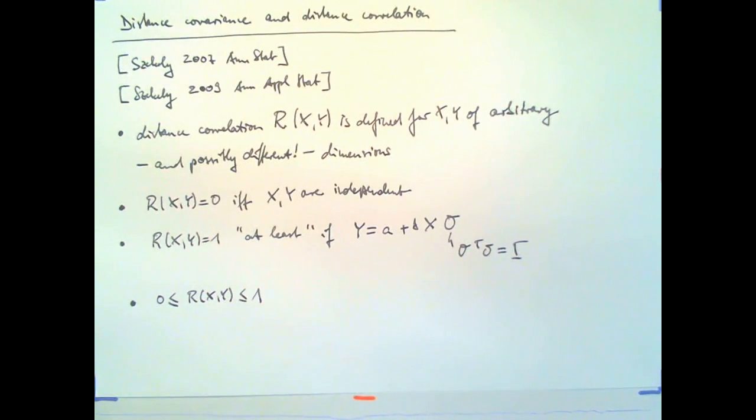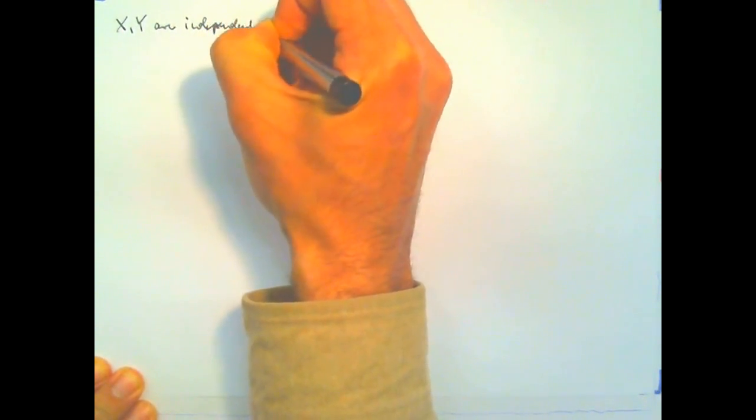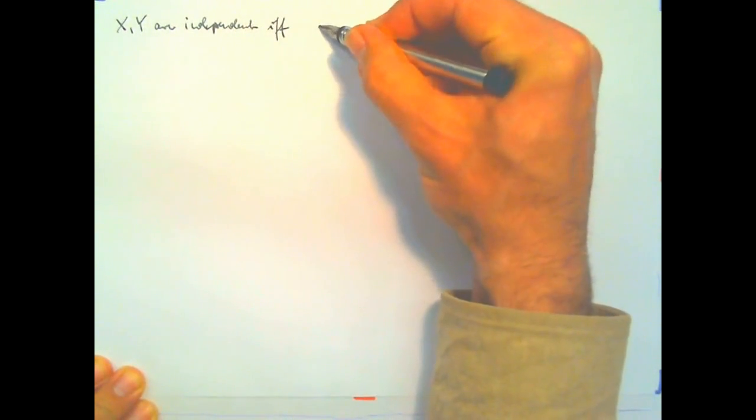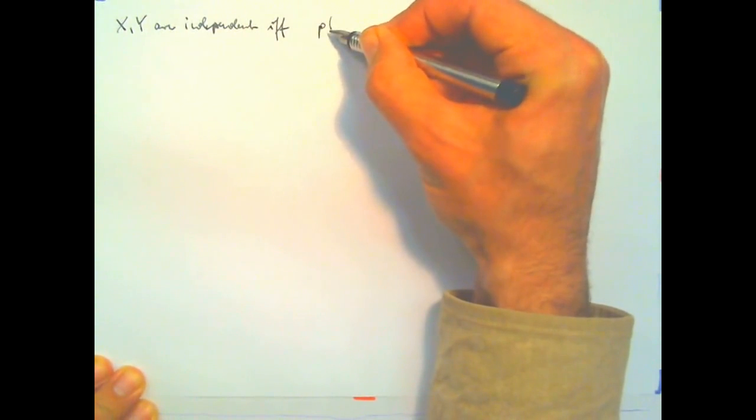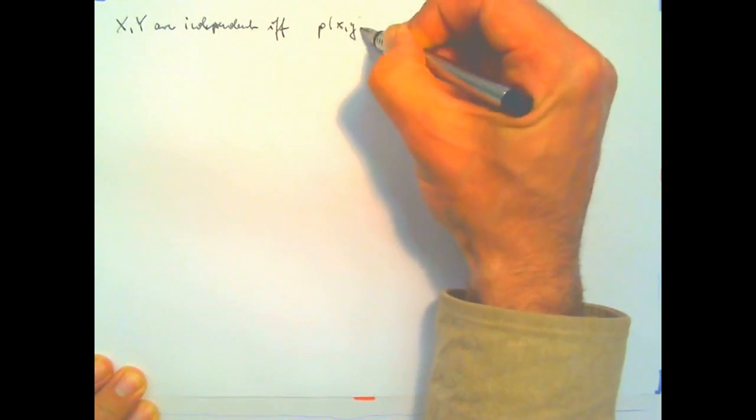Now here is just a gist of the theoretical argument. So in general, X and Y are independent exactly if the joint distribution is the product of the marginals.